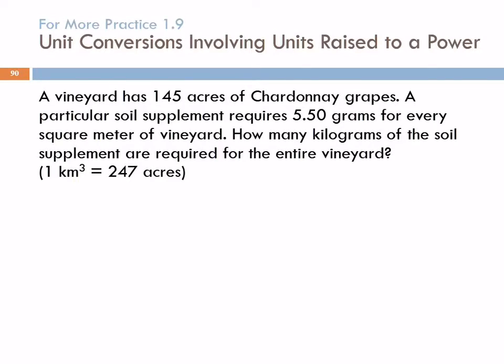A vineyard has 145 acres of Chardonnay grapes. A particular soil supplement requires 5.5 grams for every square meter of vineyard. How many kilograms of the soil supplement are required for the entire vineyard?